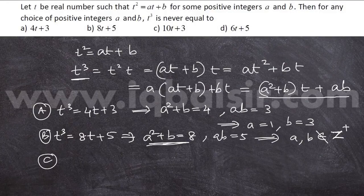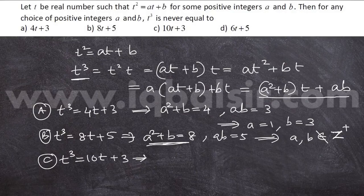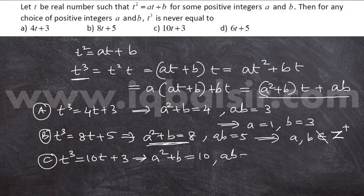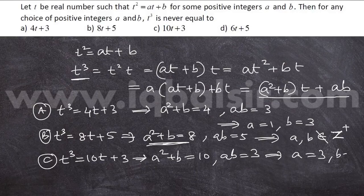In C, we have t cubed is equal to 10t plus 3. That means a squared plus b is equal to 10, ab is equal to 3. So it is easy to find that a is equal to 3 and b equal to 1.